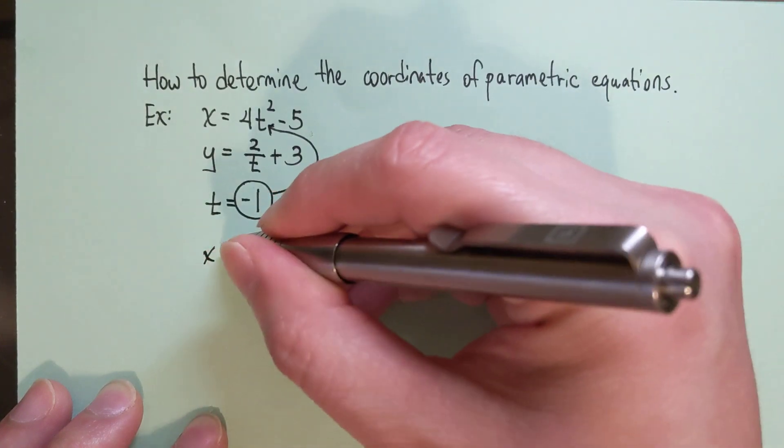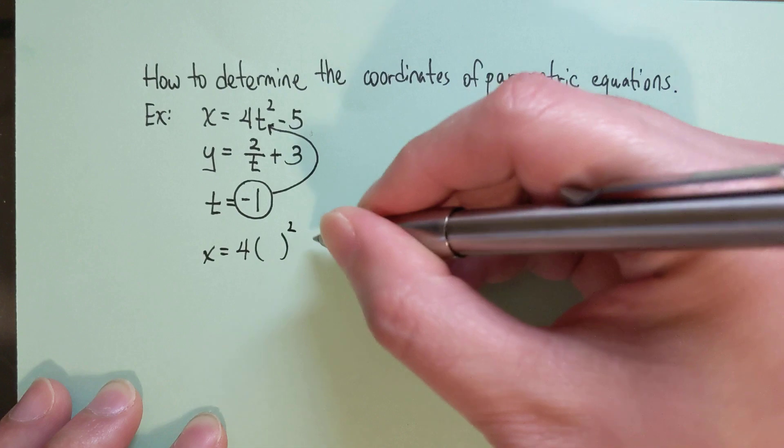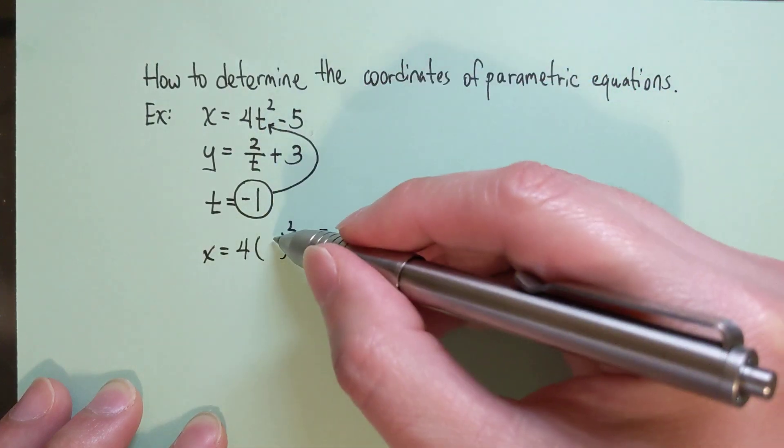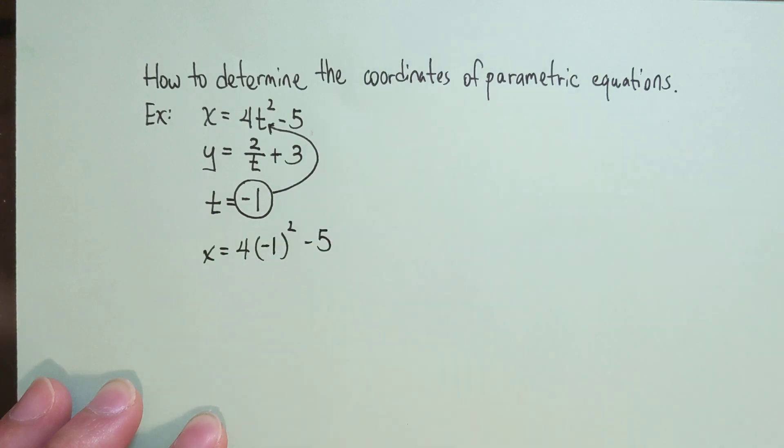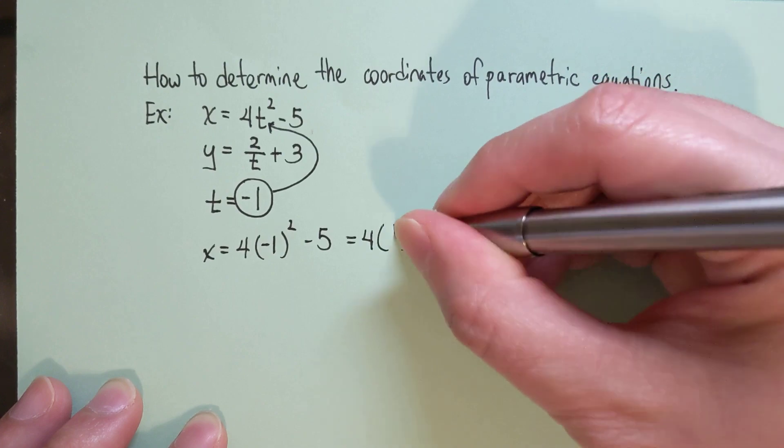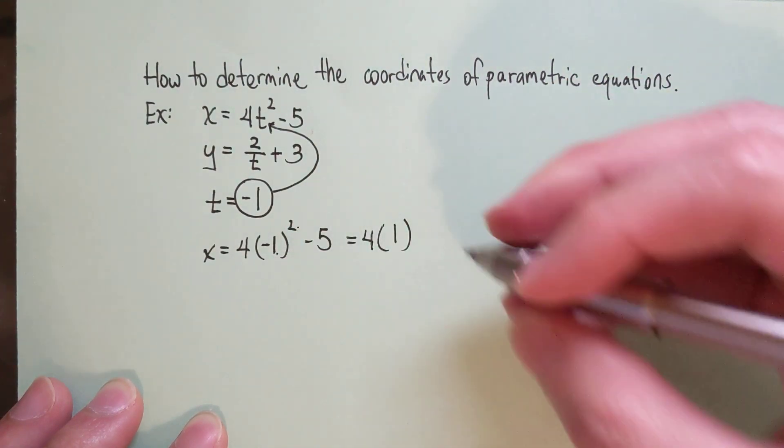Therefore, x equals 4 times something squared minus 5, and in this case t would be negative 1, which is 4 times positive 1. Negative 1 squared means negative 1 times negative 1.